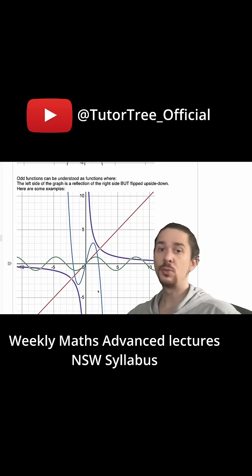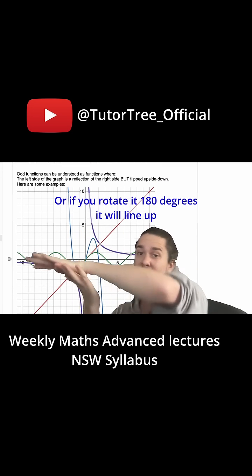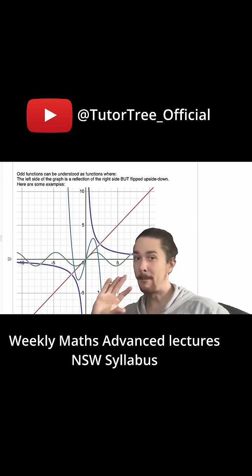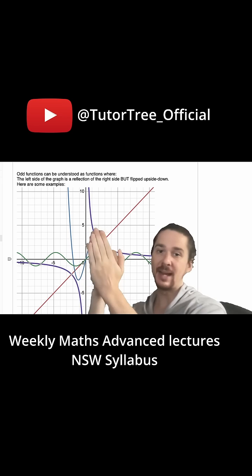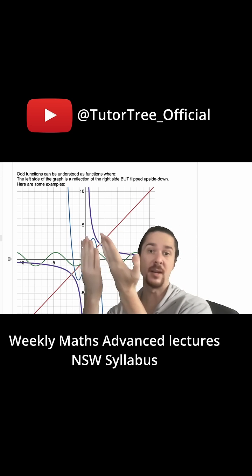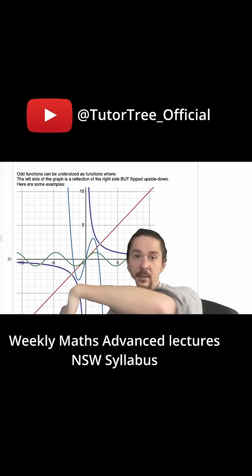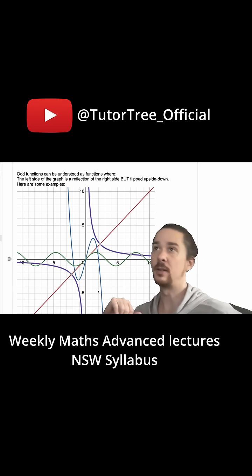Odd functions are functions where if you folded this and then flipped it upside down, it would line up. A type of symmetry, but it's not so simple. You can't fold it in any one direction and have it line up. You have to fold it horizontally and then vertically. This is an odd function. These are all examples of odd functions illustrated here.